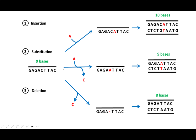For substitution, we're replacing a C with an A based on the diagram — the A comes in and the C goes out. That gives us the substitution mutation. And for deletion, we just lose the nucleotide and end up with a shorter chain. This makes a lot of sense — are we following?